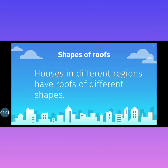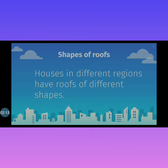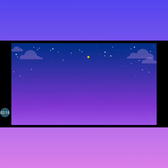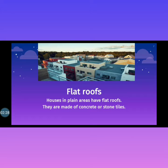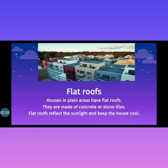Houses in different regions have roofs in different shapes, according to different weather conditions. First of all, flat roofs — like the houses we live in. We are living in plain areas. Houses in plain areas have flat roofs. They are made of concrete or stone tiles. Flat roofs reflect the sunlight and keep the house cool.